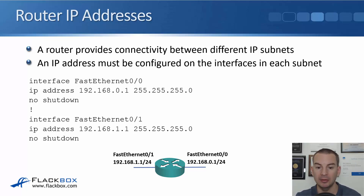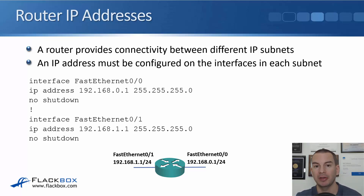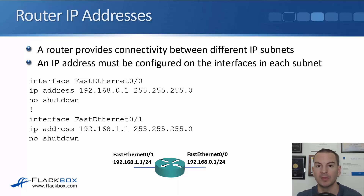The command to put an IP address on an interface — first, go to the interface. In the example here, we've got a router with interface FastEthernet0/0 on the right with IP address 192.168.0.1/24, and the interface on the left, FastEthernet0/1, has IP address 192.168.1.1/24. Obviously, the IP addresses need to be in different subnets on different interfaces.